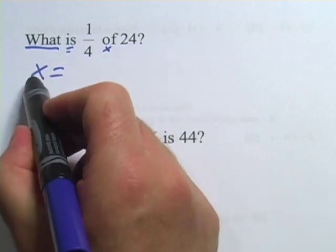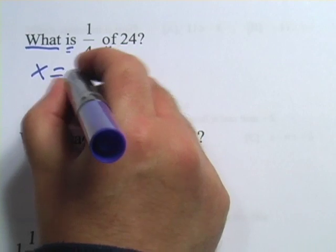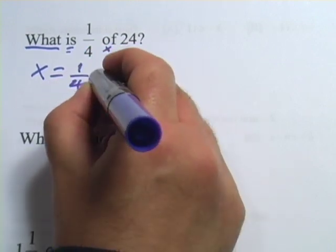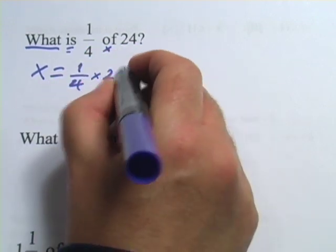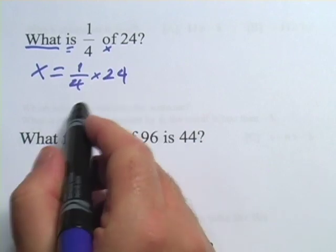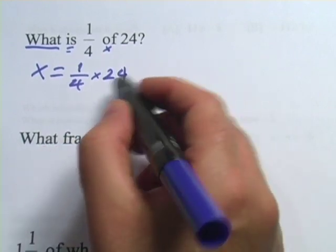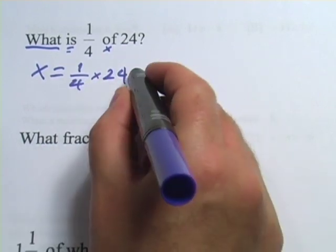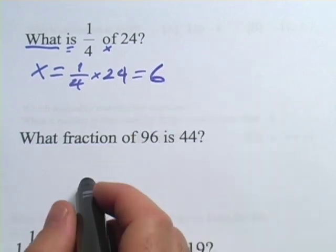So in this problem we have: what is 1/4 of (multiply) 24, and you can see 1/4 times 24—you could try it on your calculator—it's the same thing as dividing 24 by 4. It's what we thought it was, it's 6.